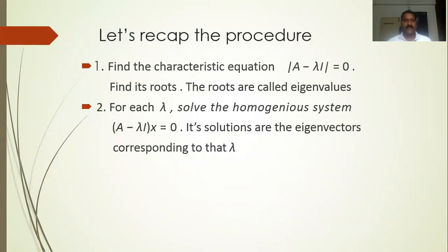Let's recap the procedure — it's a two-step process. Step 1: given a matrix A, form the characteristic equation det(A minus lambda I) equal to 0, find its roots, and those roots are called the eigenvalues. Step 2: for each eigenvalue, plug it into the homogeneous system (A minus lambda I)x equal to 0, and you get the eigenvectors.